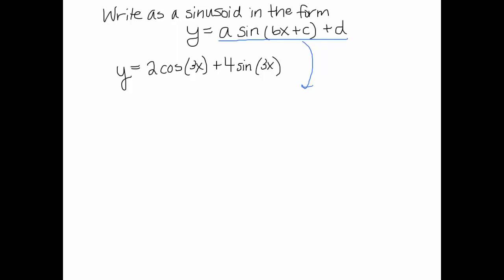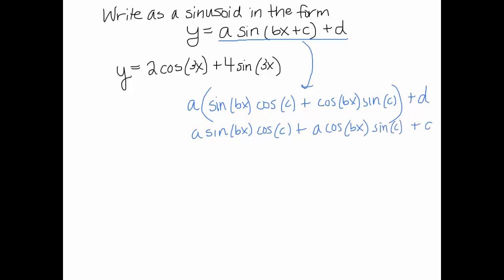So I'm going to show you another way of thinking about this where we are actually going to use the sine of two angles being added together. So I'm going to take this form right here and I'm going to break it up. So I know that that's going to be a times a whole lot of stuff. Because we're going to do the sine of bx cos of c plus the cos of bx times the sine of c. And then don't forget your plus d at the end.